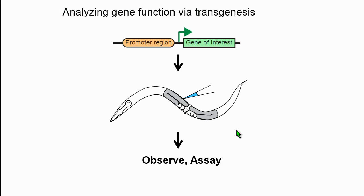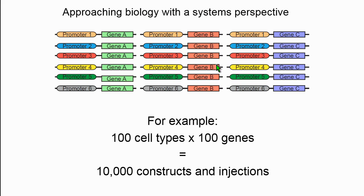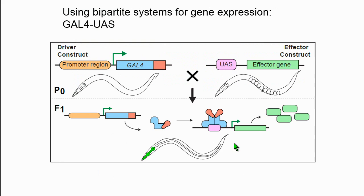In genetically tractable organisms, a fundamental way we analyze gene function is to take a gene of interest, fuse it to a promoter, introduce a transgene to an animal, and assay for some phenotype. Sometimes we're interested in one gene and ask what it contributes to a variety of cell types. Other times we're interested in one cell type and the roles played by genes it expresses. If you look at a couple of promoters and genes, this is feasible, but it doesn't scale well — 100 cell types and 100 genes would require 10,000 constructs and injections.